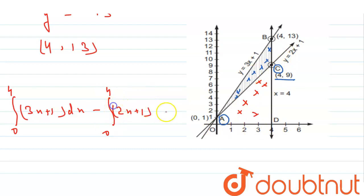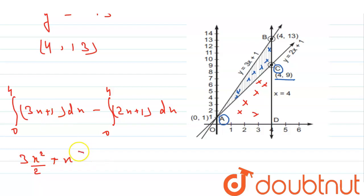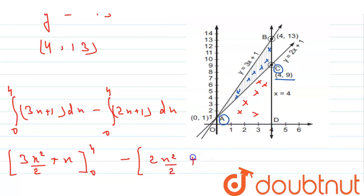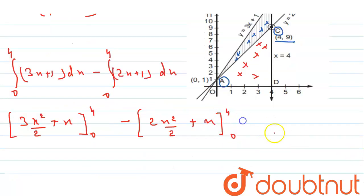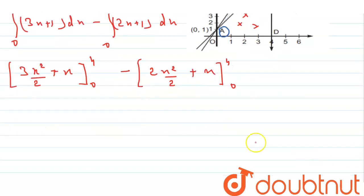Integrating: the integral of 3x is 3 × x²/2, plus the integral of 1 is x, with limits 0 to 4. For the second part: 2 × x²/2 plus x, with limits 0 to 4. Substituting the upper limit of 4 and the lower limit of 0 — since the lower limit terms become 0.